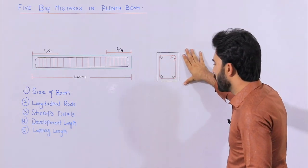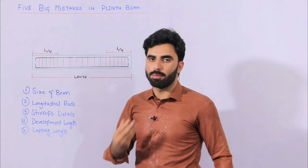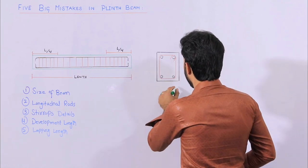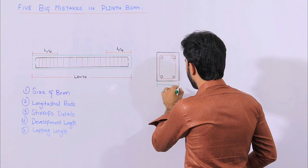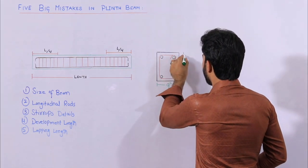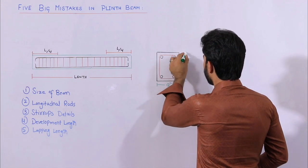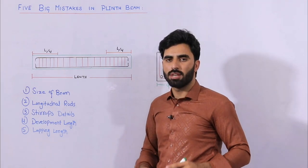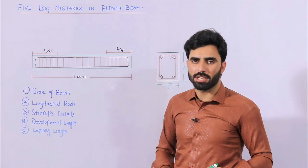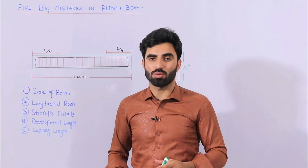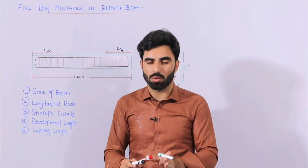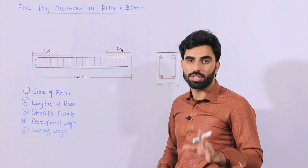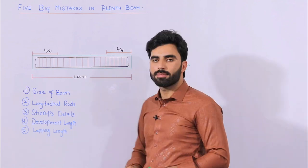You can see this is the section. Remember, if you are making one story or two stories, the size of the plinth beam should not be less than 9 by 12 inches. This is its width — it should not be less than 9 inches — and this is its depth, which is 12 inches. In most construction you can see people are making a square column of 9 by 9 inches, which is not correct because the depth should be increased compared to its width. So 9 by 12 inches is the minimum size of plinth beam for a one-story or two-story residential building.